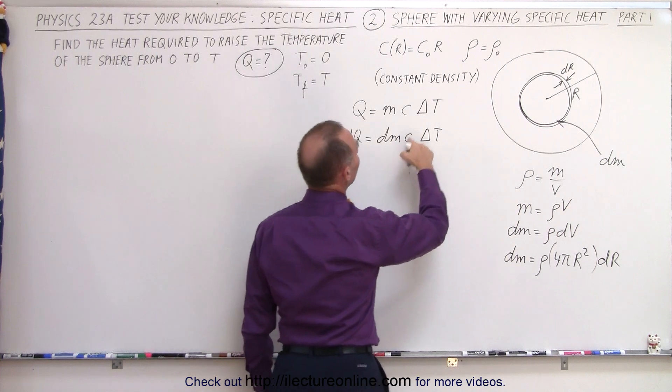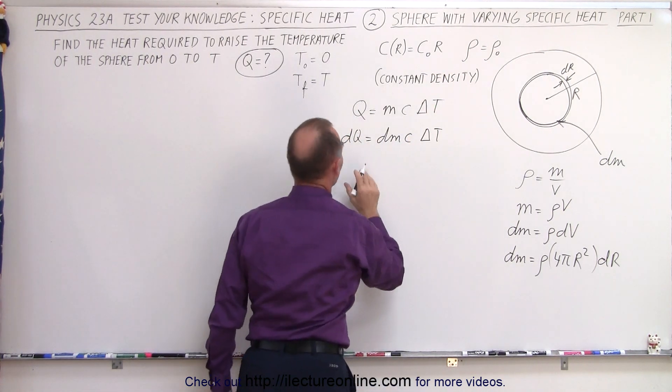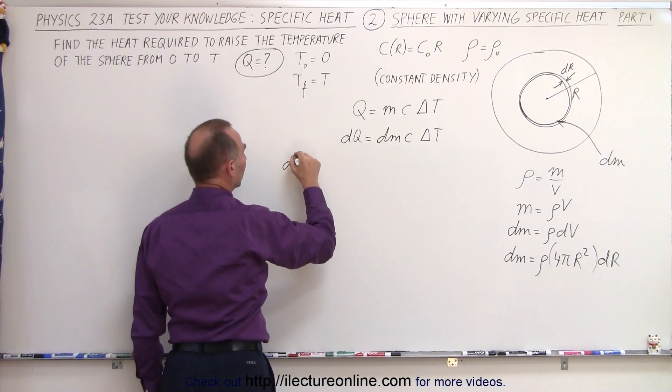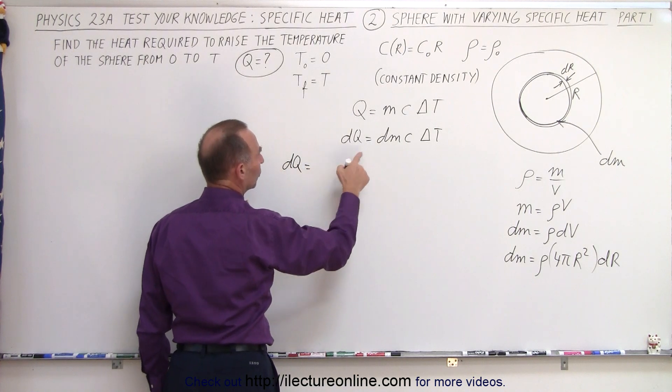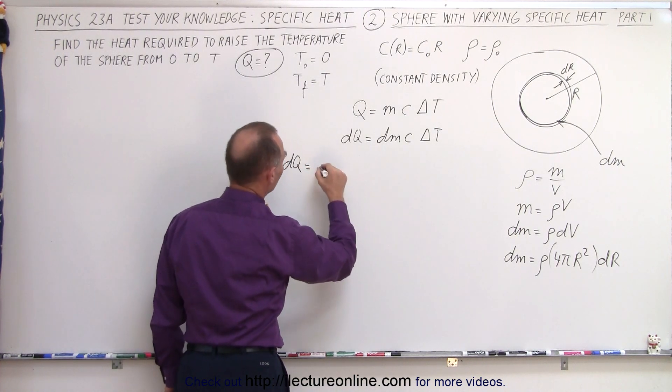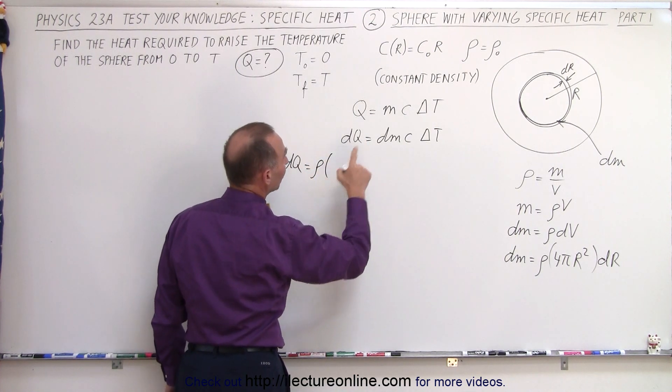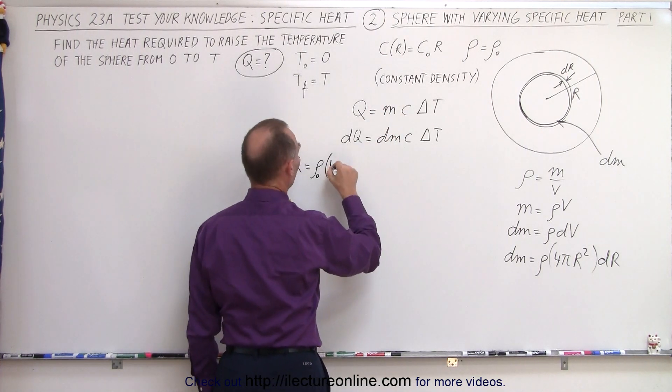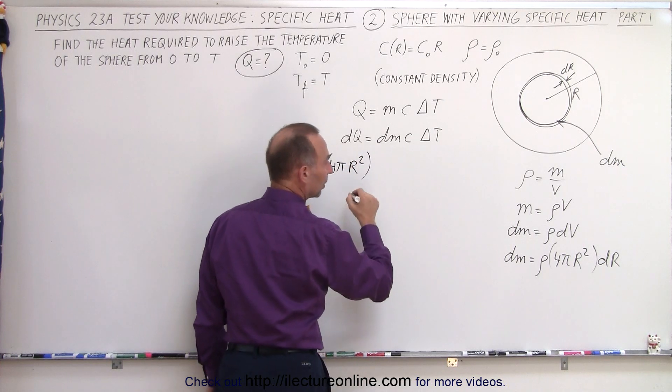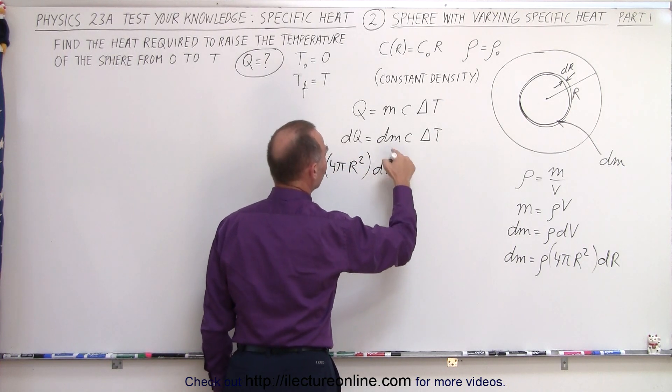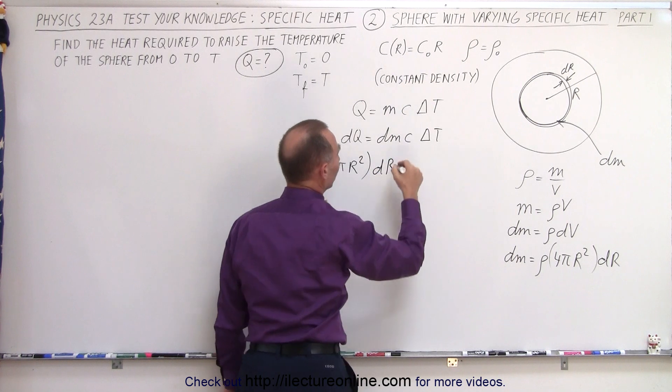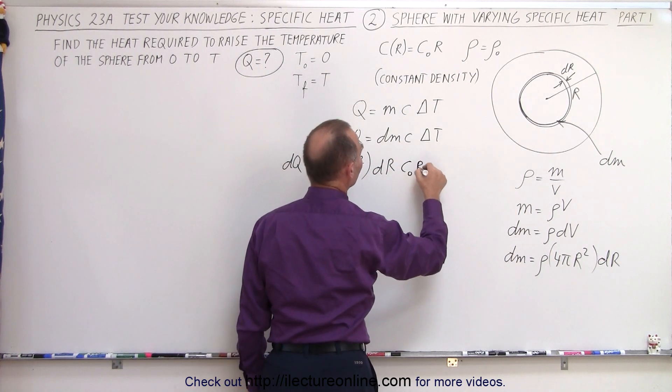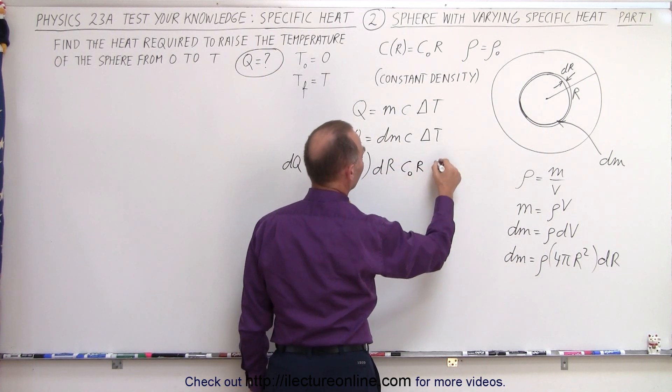So, we now can also express c in terms of the radius, and now we can write this equation as follows. dQ is equal to dm, which is the density, and of course the density is density sub-naught, times 4 pi times the radius squared, times dr, that's the dm. c can be expressed as c sub-naught times r, and now we still have a delta t.